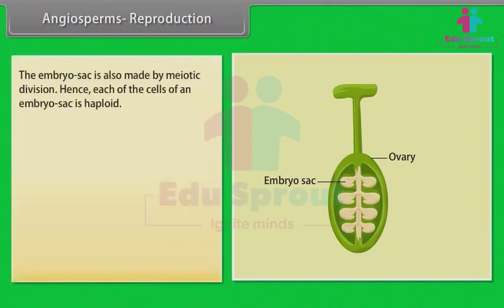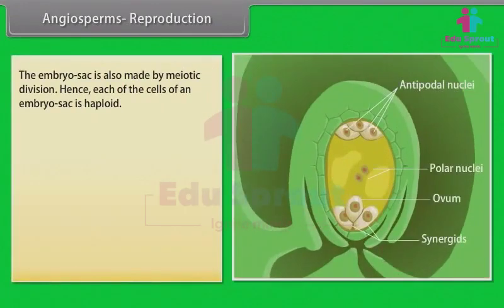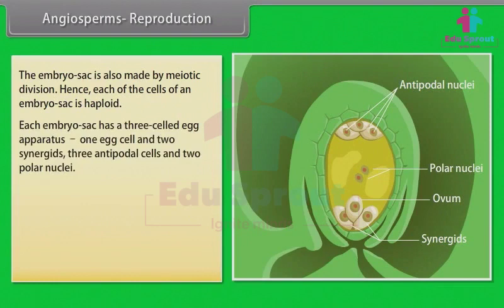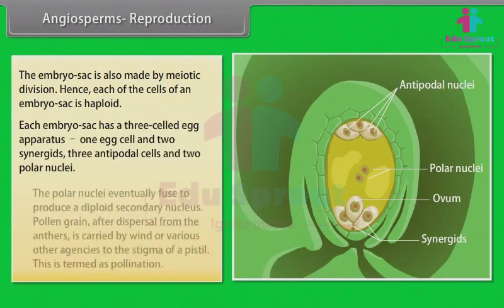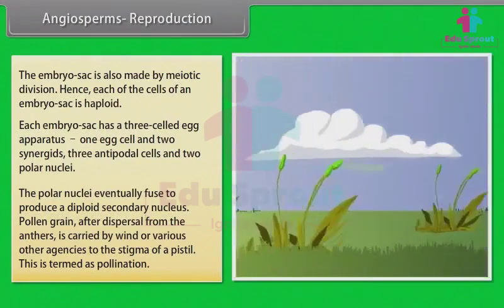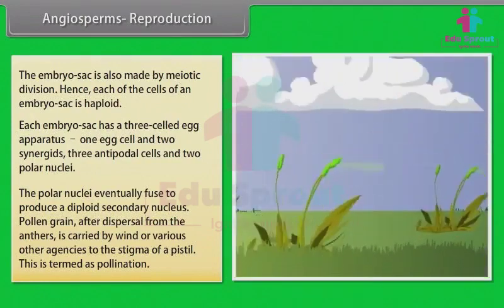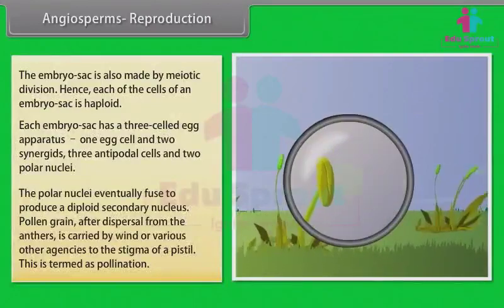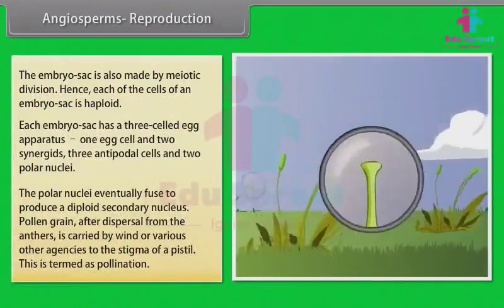The embryo sack is also formed by meiotic division, hence each of the cells of an embryo sack is haploid. Each embryo sack has a three-celled egg apparatus — one egg cell and two synergids — three antipodal cells, and two polar nuclei. The polar nuclei eventually fuse to produce a diploid secondary nucleus. The pollen grain, after dispersal from the anthers, is carried by wind or various other agencies to the stigma of a pistil. This is termed pollination.